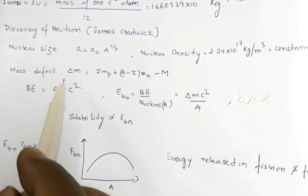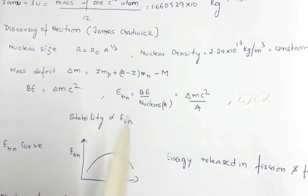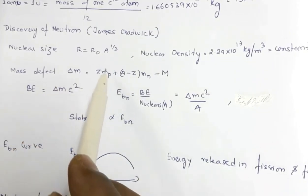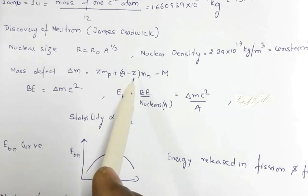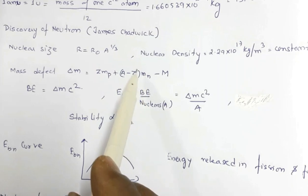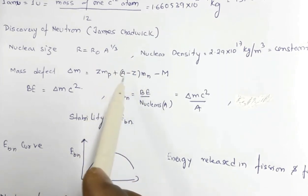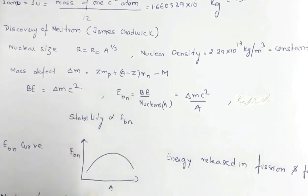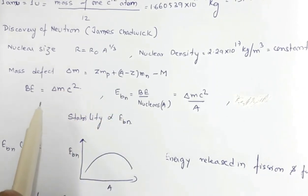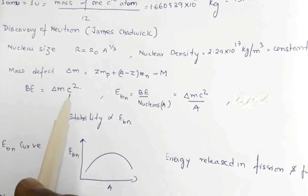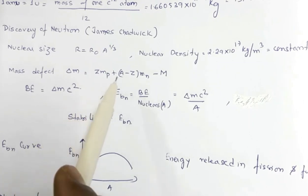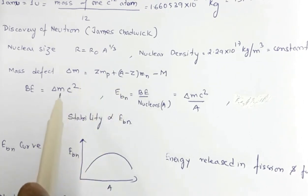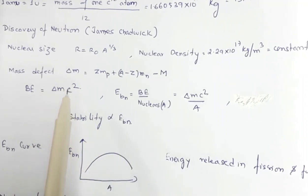Next is the concept of mass defect. Mass defect Δm = Z·mₚ (mass of protons) plus (A − Z)·mₙ (mass of neutrons) minus the mass of the nucleus. Binding energy is mass defect times c². So binding energy is the energy equivalent of mass defect.